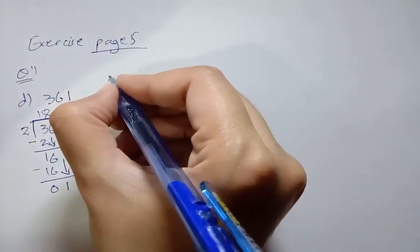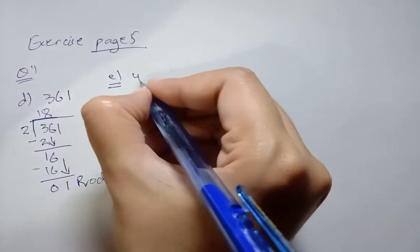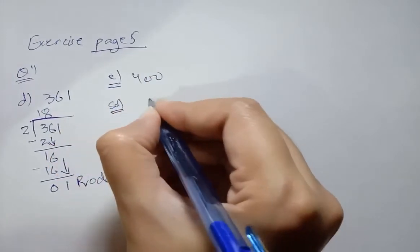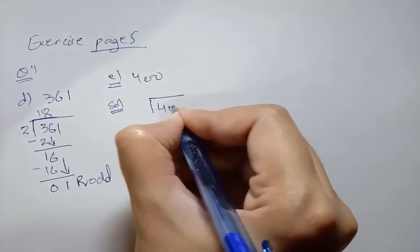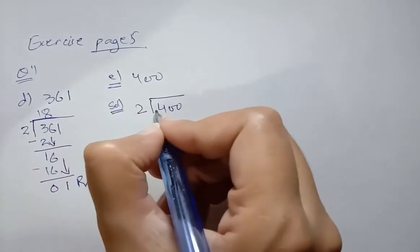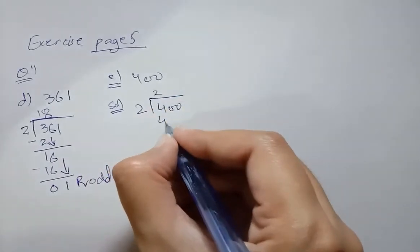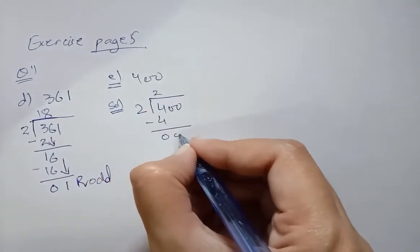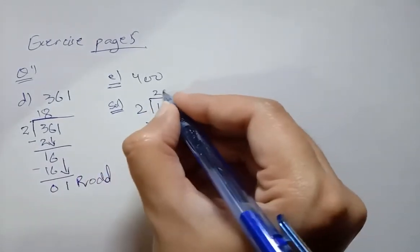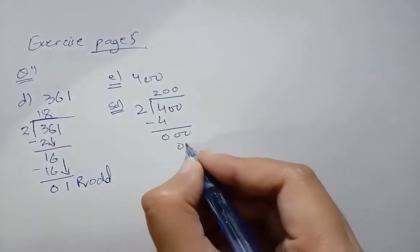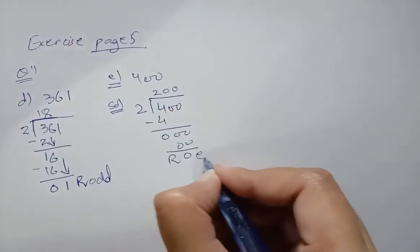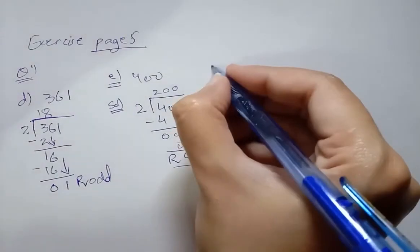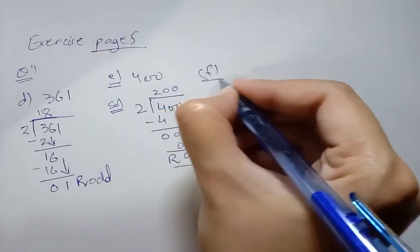Now move towards part e, which is 400. We divide 400 by 2. Two twos are four — subtract, the answer is 0. Two zeros are zero, two zeros are zero. The remainder is 0, so 400 is an even number.